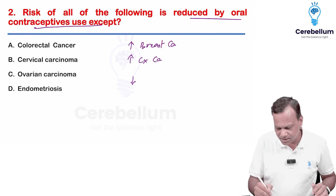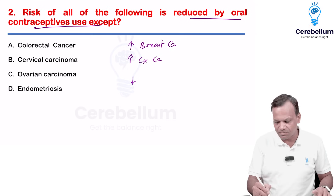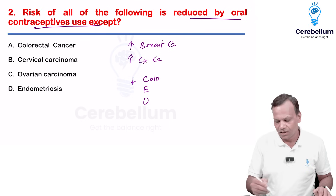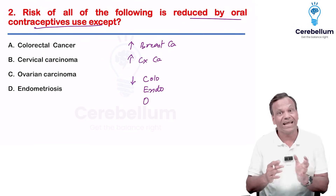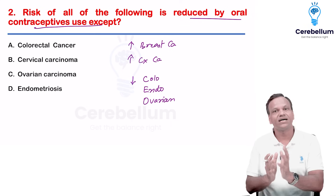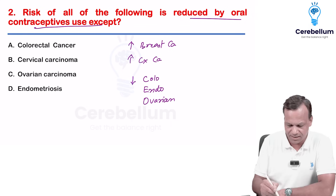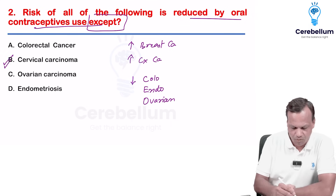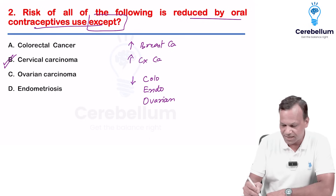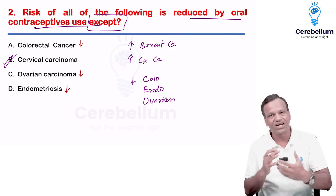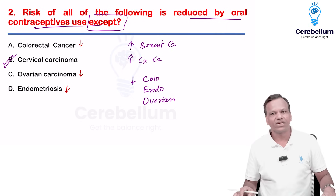There is decreased risk of three cancers remembered as CEO: colorectal carcinoma, endometrial carcinoma and endometriosis, and ovarian carcinoma — these cancers are reduced. So which cancer risk is reduced except? The answer is cervical carcinoma — the risk is increased. Colorectal, ovarian, endometriosis, and endometrial carcinoma are all reduced. So the answer is cervical carcinoma.